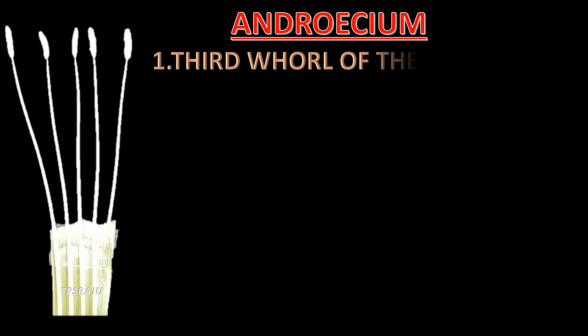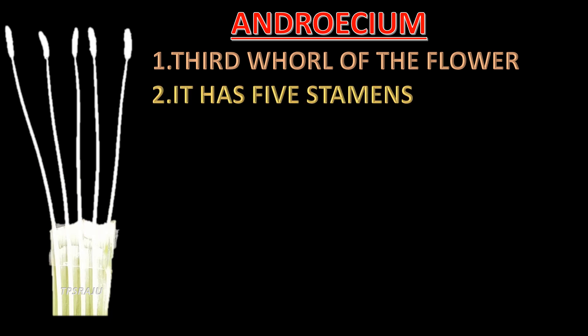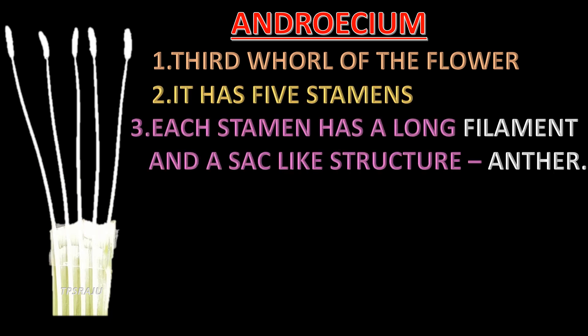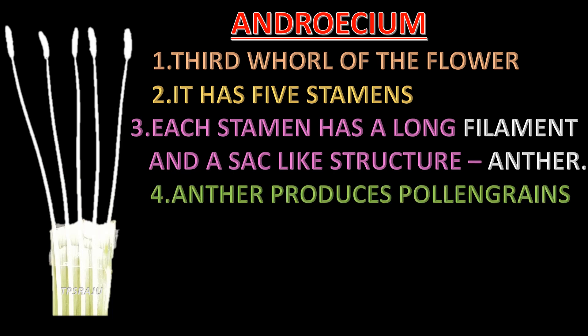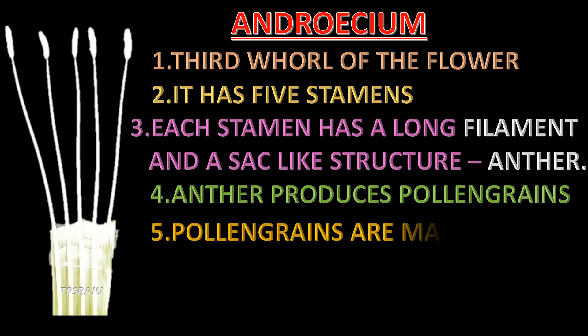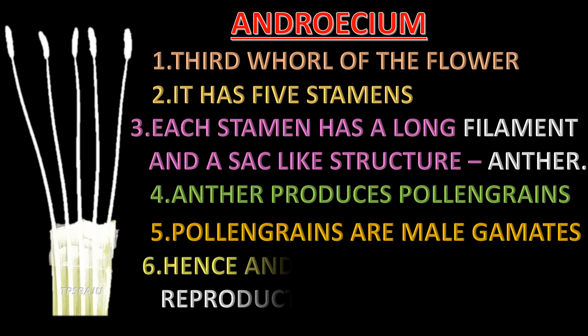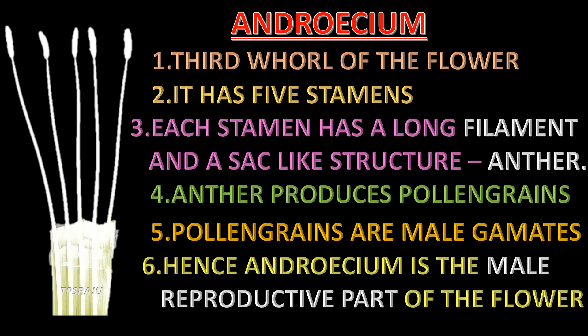This is the androecium, the third whorl of the flower. It has five stamens. Each stamen has a long filament and a sac-like structure called the anther. The anther produces pollen grains, which are the male gametes. Hence the androecium is the male reproductive part of the flower.